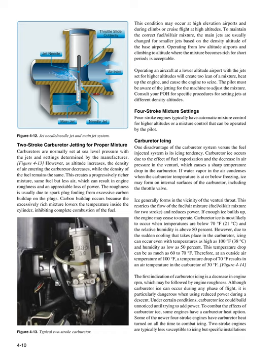Four-stroke mixture settings: four-stroke engines typically have automatic mixture control for higher altitudes or a mixture control that can be operated by the pilot. Carburetor icing: one disadvantage of the carburetor system versus the fuel-injected system is its icing tendency. Carburetor ice occurs due to the effect of fuel vaporization and the decrease in air pressure in the venturi, which causes a sharp temperature drop in the carburetor. If water vapor in the air condenses when the carburetor temperature is at or below freezing, ice may form on internal surfaces of the carburetor, including the throttle valve, restricting the flow of the fuel/air mixture and reducing power. If enough ice builds up, the engine may cease to operate.